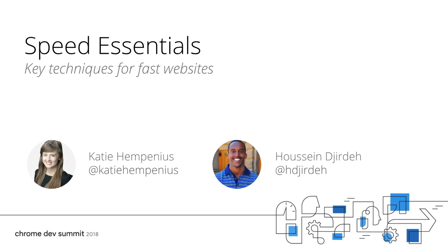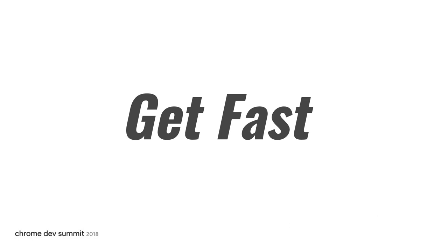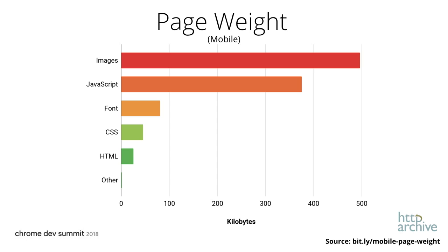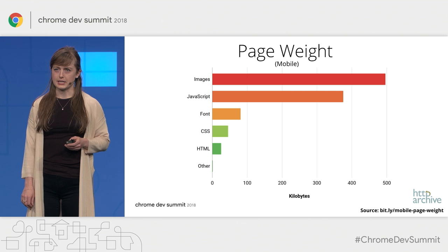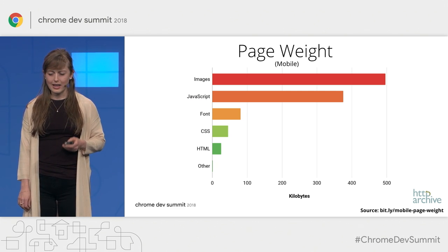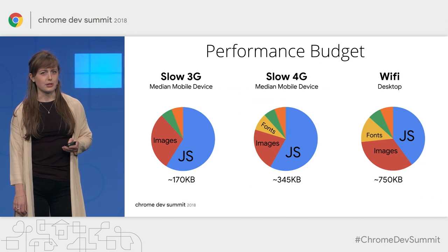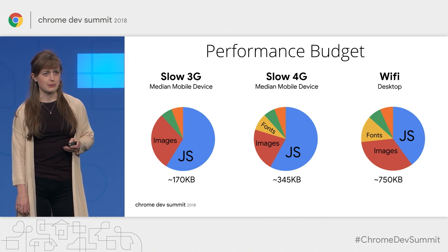Today, Hussein and I are going to talk with you about how you can make your site fast. We're going to focus on three things: images, web fonts, and JavaScript. We've chosen to focus on these three things because they are the three largest components of most websites, and they're likely to be the three largest components of your performance budget.